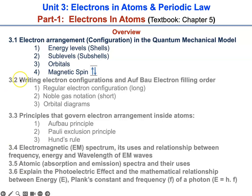We are going to cover electron arrangement — in other words electron configuration — in the quantum mechanical model. There are four levels of arrangements: energy levels, sublevels, orbitals, and magnetic spin.